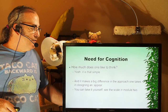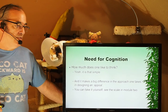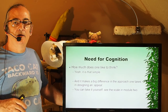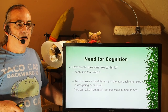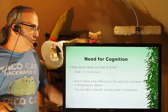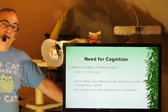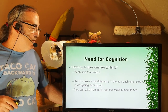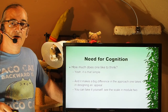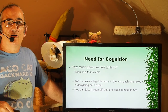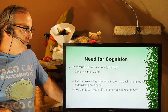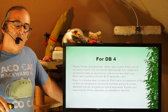Need for cognition: how much does one like to think? It's pretty much that simple. It makes a big difference in the approach one takes to designing an appeal. When you're writing, think about: to what extent is my audience high NFC or low NFC? That's going to push you towards central argument versus peripheral argument. You can take the Need for Cognition scale yourself — there's a link to a PDF in Module 2 so you can assess your own need for cognition. They've been using it in the Petty Lab since the 1980s.